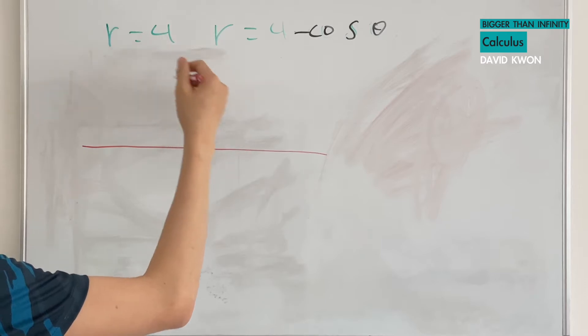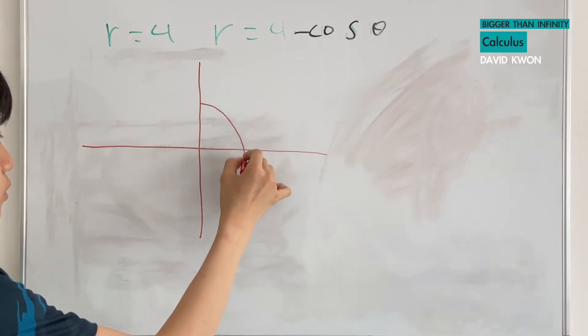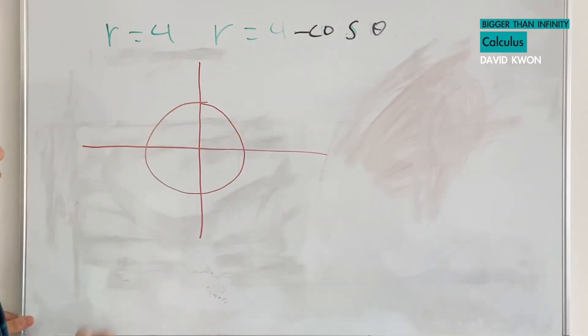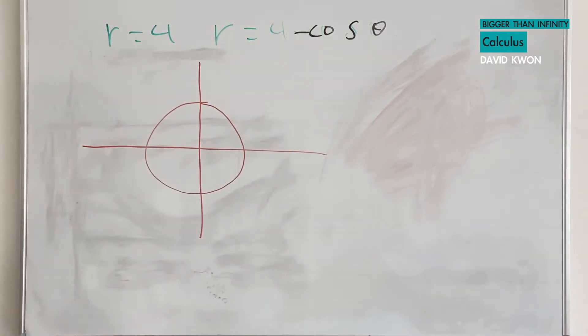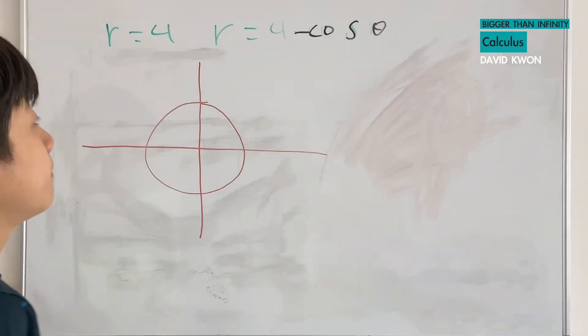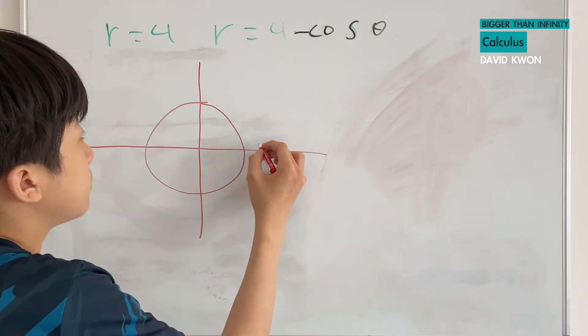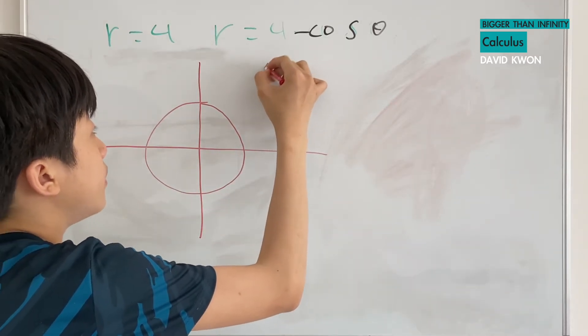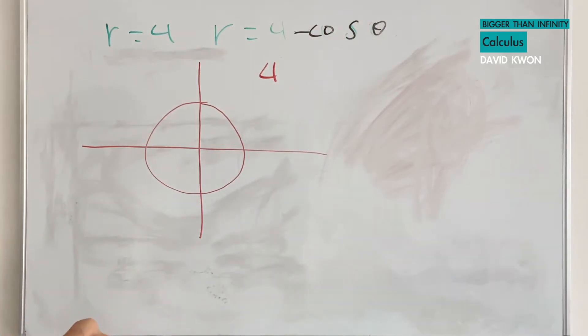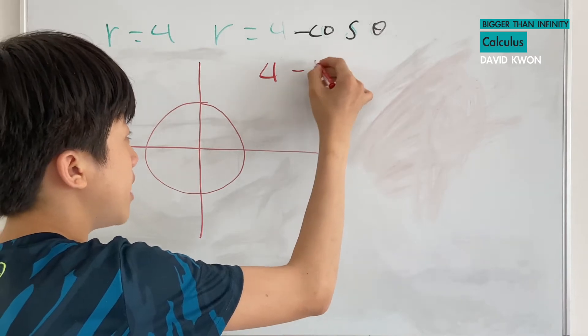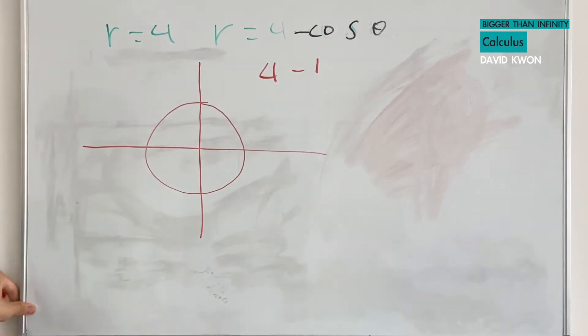So r equals 4, this is just the circle that has the radius of 4. And it says r equals 4 minus cosine theta. That will look like this. Well, we have a 4 and the biggest number that a cosine theta can have is 1, so that will be minus 1.